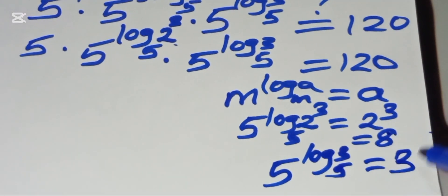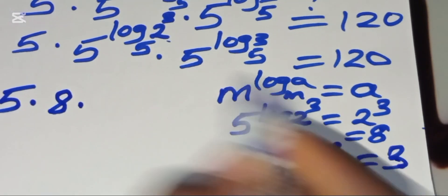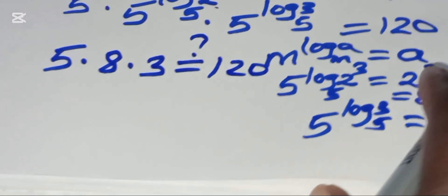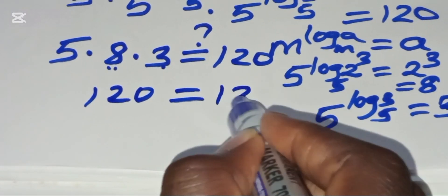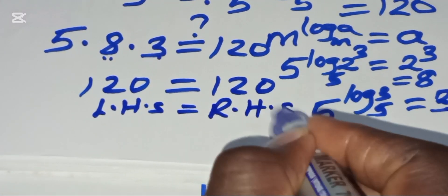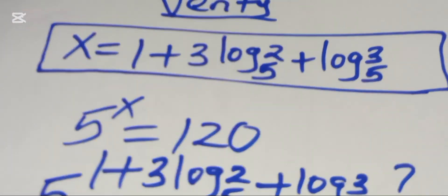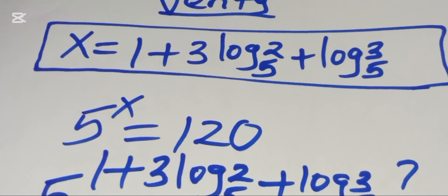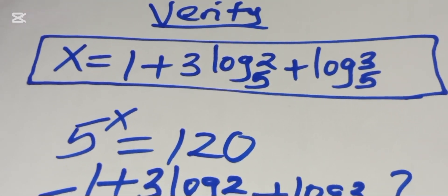Substituting back, we have 5 × 8 × 3. That gives us 5 × 8 = 40, and 40 × 3 = 120, which equals 120 on the right-hand side. This confirms that x = 1 + 3·log₅(2) + log₅(3) satisfies the equation. Please like, comment, and subscribe. See you in the next video!